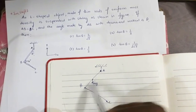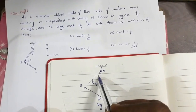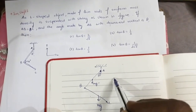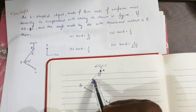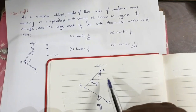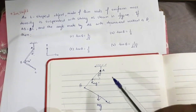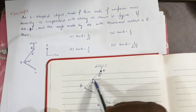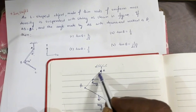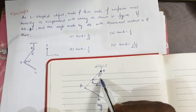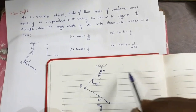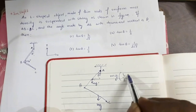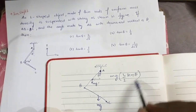The angle made by this rod with the vertical is given as theta. The torque produced by this force MG is calculated about point A. The net torque about this point will be zero. The rod length is L, so the center is at L/2. This gives L/2 cos theta and L/2 sin theta, so the torque produced by the weight of rod AB will be MG × (L/2) sin theta.